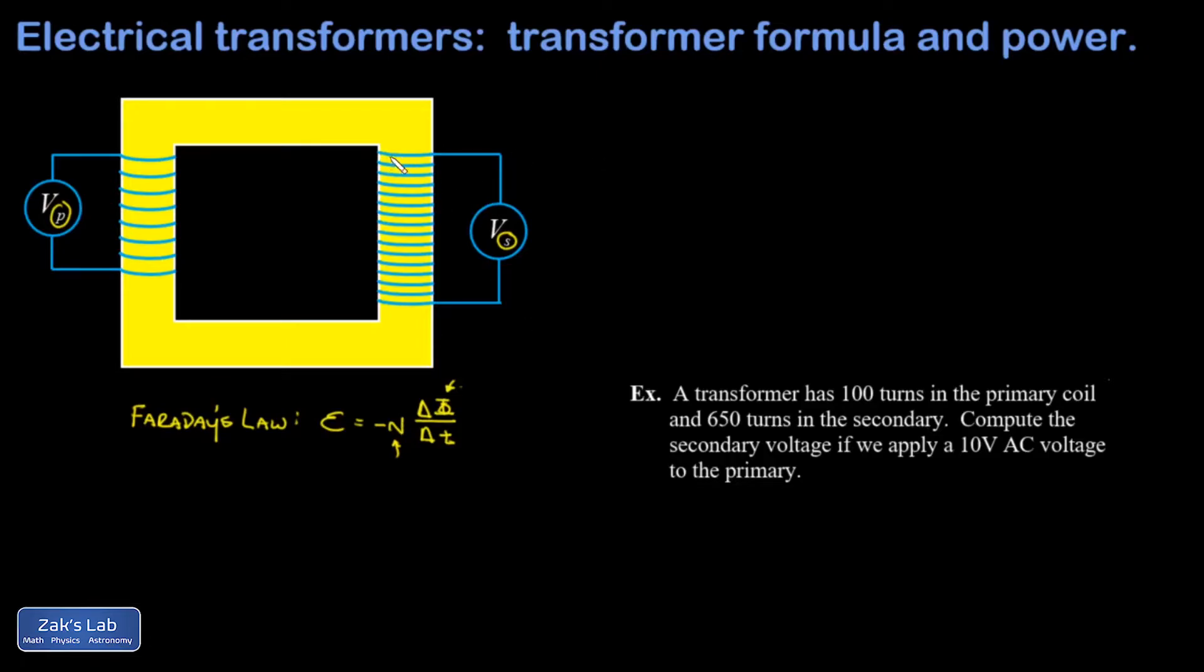If I put more turns in the secondary coil than there are in the primary coil, then the induced EMF on this side of the transformer can be higher than what I put in on this side. We can also run this the opposite direction and step the voltage down by using a transformer, and these are called step up and step down transformers respectively.